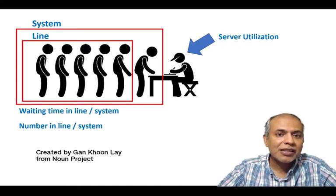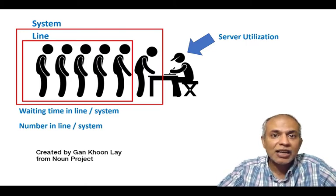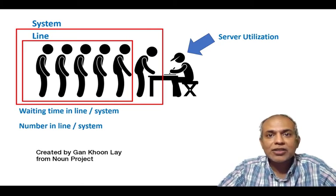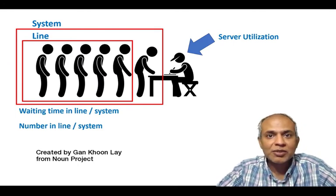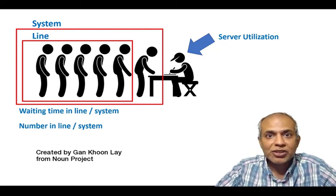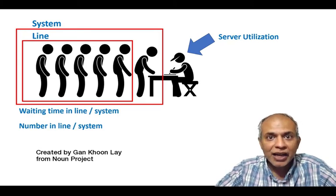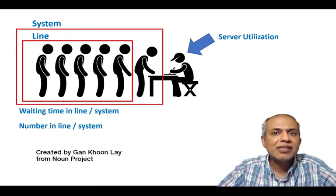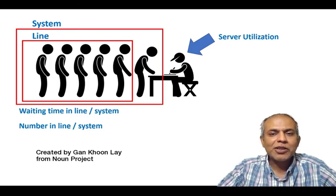Here we are primarily concerned with the time it takes for customers to wait, because customers' satisfaction is directly linked to the time it takes for them to wait. We are also concerned with the length of the line, because we will have to design the facility to accommodate customers based on the number of customers that are going to wait. So from the customer wait end, we have two important metrics: the time in line and the number in line. Using these two metrics, we design the queuing system or the waiting line system that fits with our business policy.